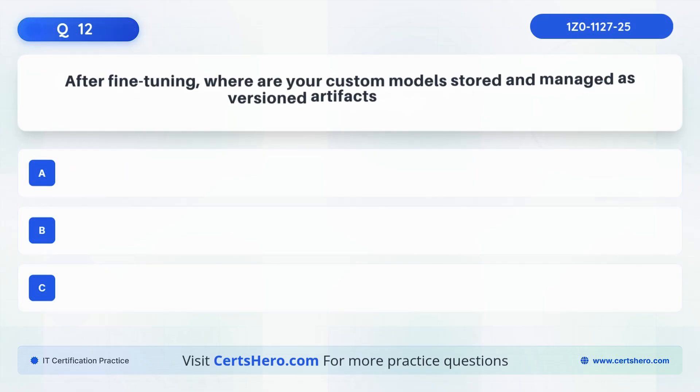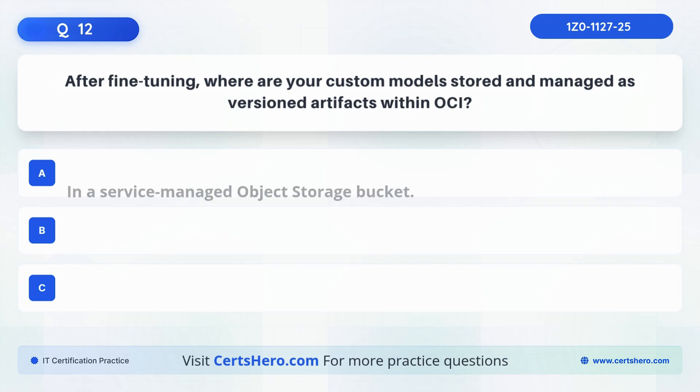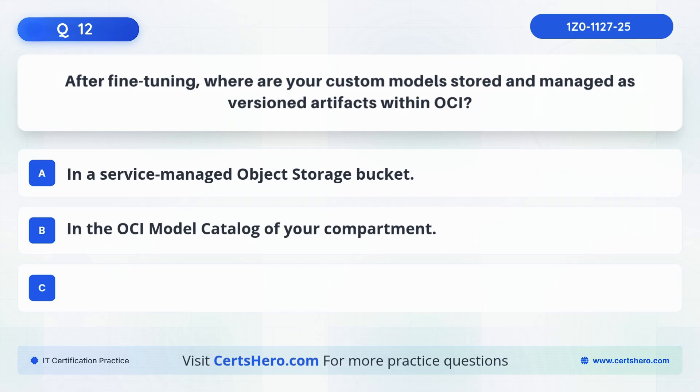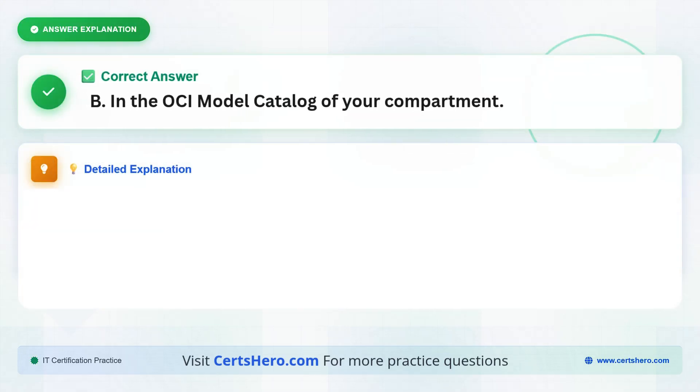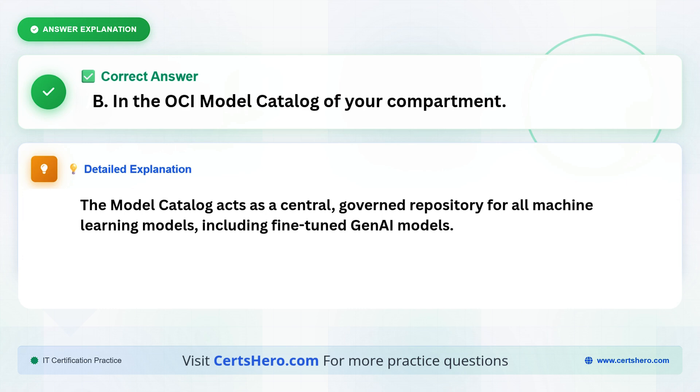Question 12. After fine-tuning, where are your custom models stored and managed as versioned artifacts within OCI? Are they in a service-managed object storage bucket, in the OCI model catalog of your compartment, or in OCI container registry? The correct answer is B, in the OCI model catalog of your compartment. The model catalog acts as a central, governed repository for all machine learning models, including fine-tuned Gen AI models.